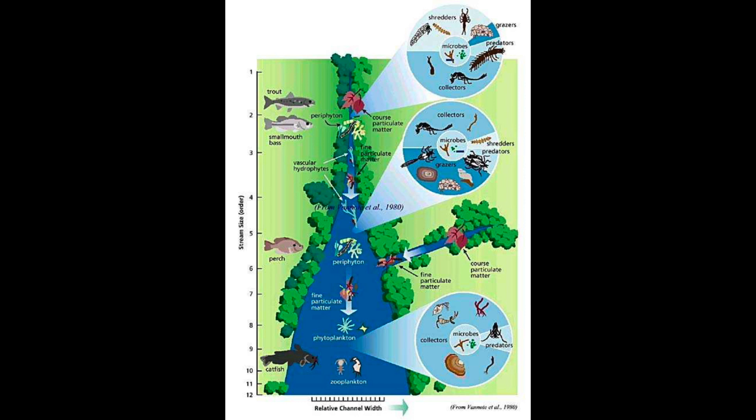Lastly, in the larger rivers, the autochthonous resources still dominate, but these resources are floating algae, plant material, and other detritus. So species that can filter particles from the water column, known as filter gatherers, or species that collect particles from the benthos, known as collector gatherers, dominate the macroinvertebrate assemblage in large rivers.